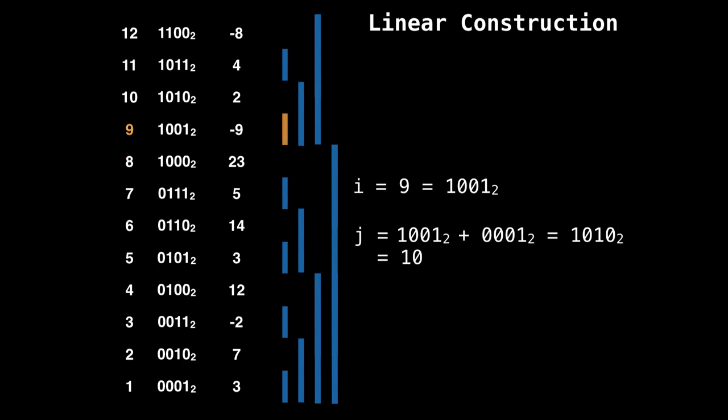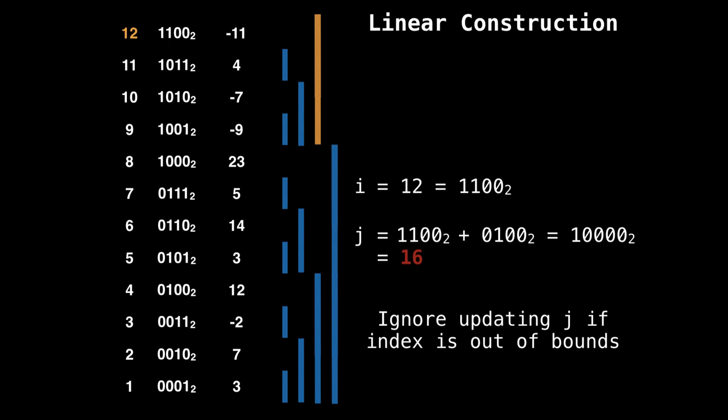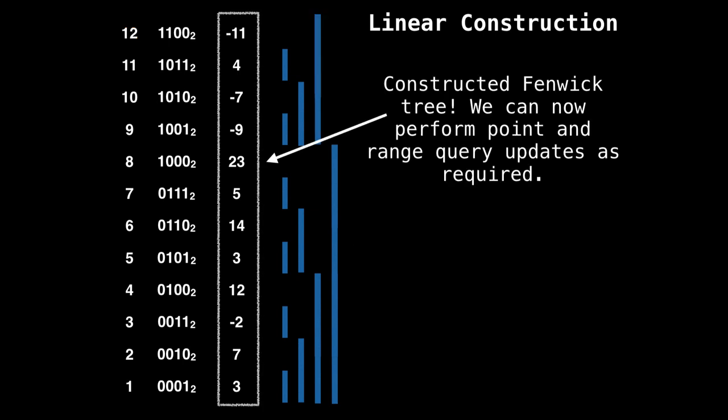So now we keep going. i is nine, nine's least significant bit is one. So j is 10. That's where the parent is. So keep propagating that value. 10's parent is 12, 11's parent also 12. And now we have the same sort of situation we had with eight where we have an out of bounds situation. So we ignore it. The values that are there right now are the values of the Fenwick tree. And with these values, we can do range queries and point updates, not with the original array that we had.